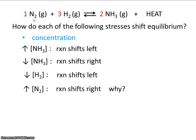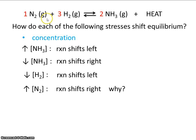Why does it shift to the right? We can explain that using collision theory. If we increase the concentration of nitrogen, in order for nitrogen to react it has to collide with hydrogen — that's the only way nitrogen and hydrogen can form ammonia. So if we increase the concentration of nitrogen, there will simply be more nitrogen around, making collisions more likely.